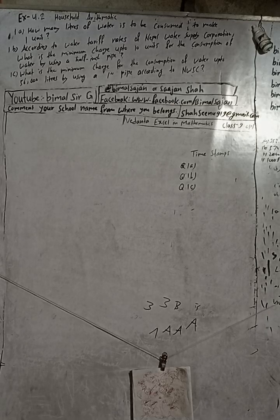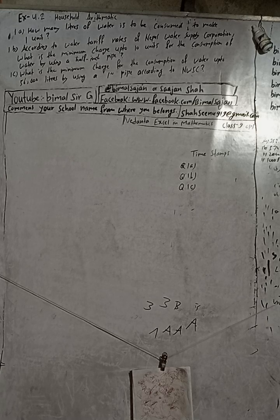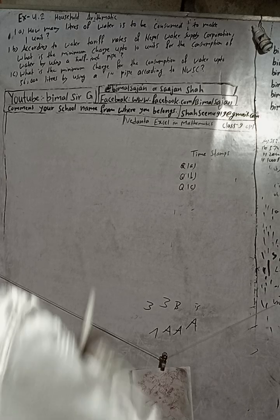Hi class 9 and 10 students, welcome back to Bimalsarji's YouTube channel. This is question number one, exercise 4.2 — Household Arithmetic — from Vedant Excel in Mathematics class 9. I'm going to solve question number one, parts a, b, and c. These are very short questions, so it's possible to cover all parts in one video. Don't forget to check the playlist of Bimalsarji for many more solutions.